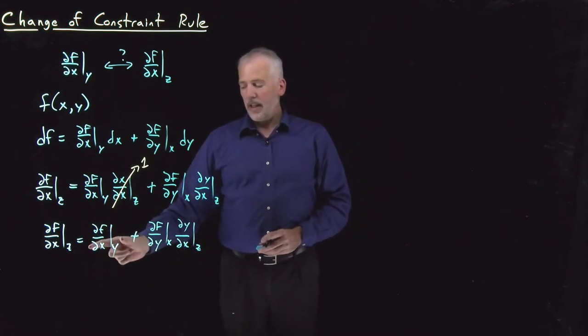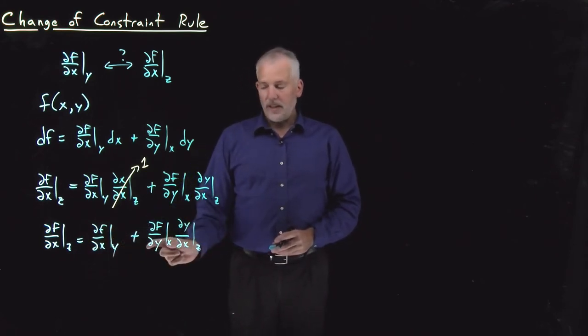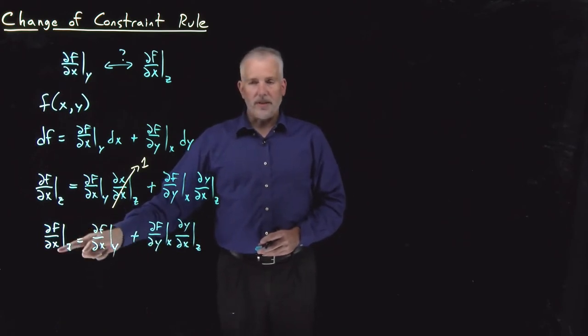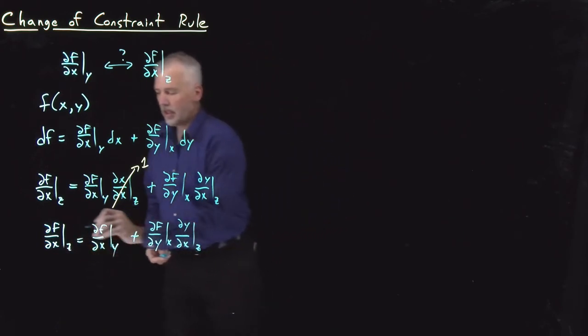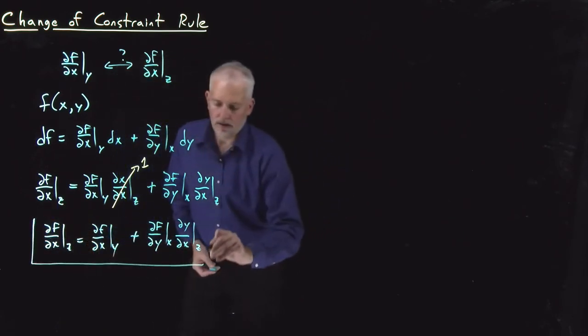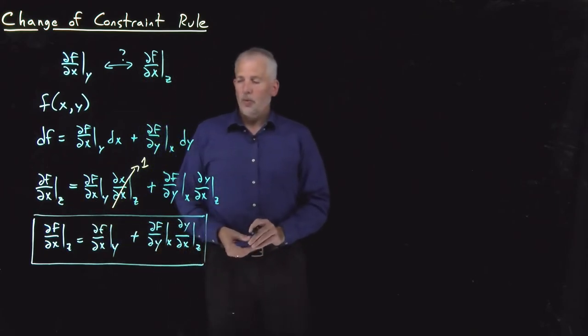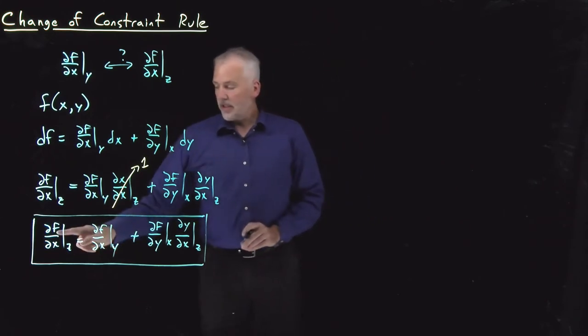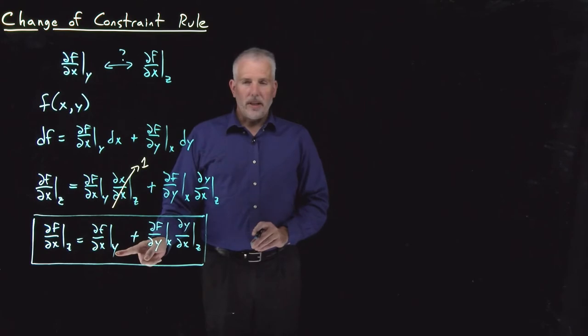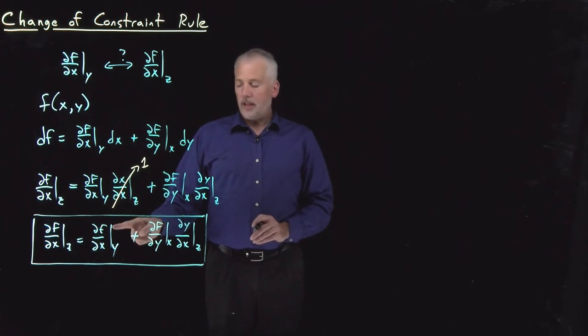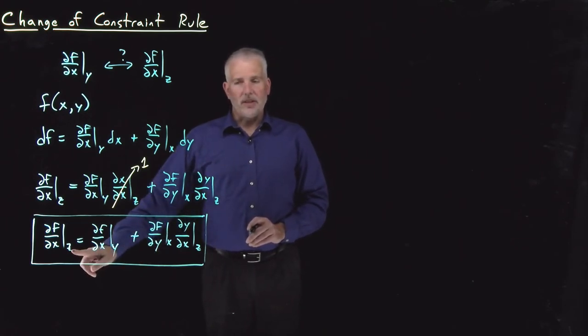So if I have this one, if I also know the values of these, I can add them to it to figure out what ∂f/∂x at constant z is. So I'll put that in a box to write down and refer to later. That's the rule that we can call the change of constraint rule, because it tells us how to get a derivative with one constraint relative to one at a different constraint. It's sometimes called the change of direction rule, because we're changing what direction we're taking the derivative in. Is it the constant y direction or the constant z direction?